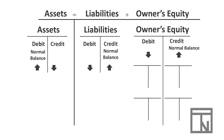The first category inside of owner's equity is capital. Capital is whenever owners put money into the business — sometimes we call this an investment. When an owner puts money into the business, their financial rights to the business increase. So capital goes on the right or increasing side of owner's equity, meaning that when capital increases it will be a credit. The opposite, a debit, will cause capital to decrease. This also means capital's normal balance side would be the credit side.